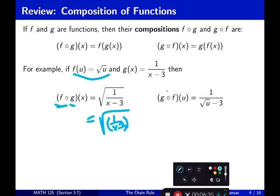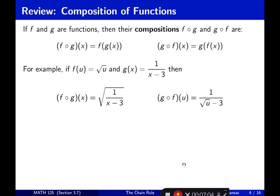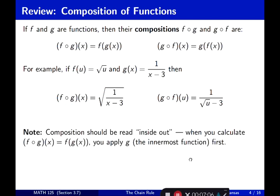Now how about g(f(u))? The outside function is g, so we write 1 over big parentheses minus 3, replacing the input variable. Now plug in the inside function f(u) = √u, and you get g(f(u)) = 1/(√u − 3). Composition is basically thinking about what's inside and what's outside.